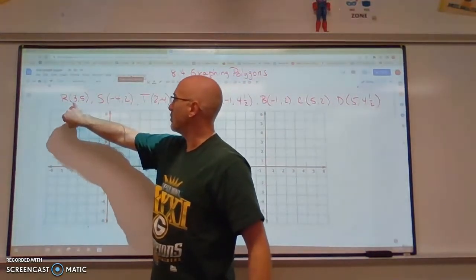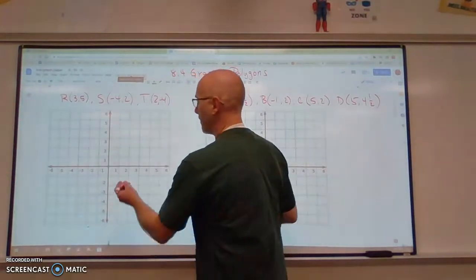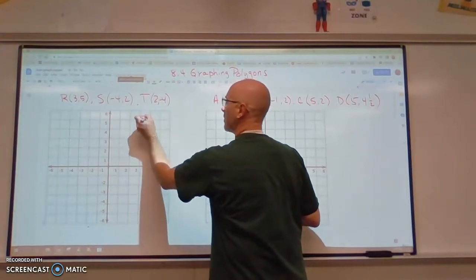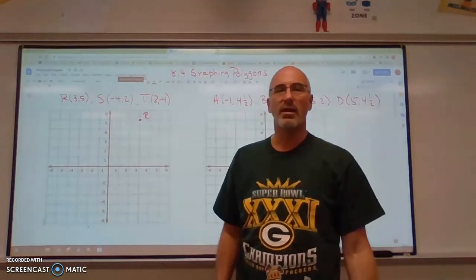Point R is going to be at 3, 5. So we are going to go 3 in the positive direction and 5 in the positive direction, and we are going to label that point R.